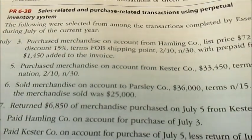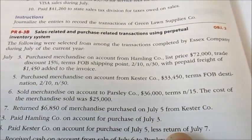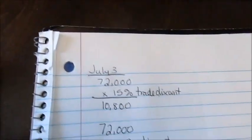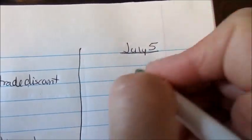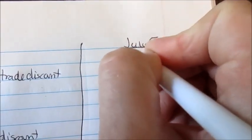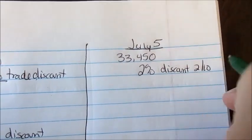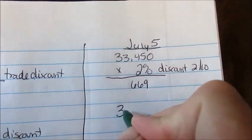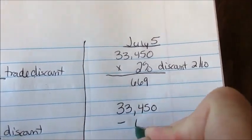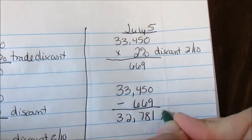July 5th: purchased merchandise on account from Kester Company, $33,450, terms FOB destination, 2/10 net 30. On our scrap paper for July 5th, our invoice total was $33,450. We have a 2% discount if we pay within two days. Multiplying those together, we get $669. So we take $33,450, subtract the $669, and we have a total of $32,781, which is the number we'll use for our journal entry.